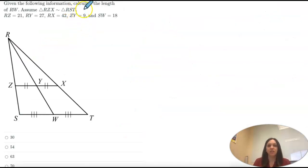Let's look at another one. Given the following information, calculate the length of RW. So we want this whole side right here. And we're assuming the RZX and RST are similar. That's going to help us write our ratios. So let's label what we have. We have RZ is 21. Our Y is 27. Our X is 42. Z to Y is 9. And then these tick marks mean equal. So if that's 9, that's 9. SW is 18. Same thing. Those three tick marks. Those three tick marks. So we are trying to find the length of the whole thing from R to W. But we only know half of it. So we need to look at some triangles.